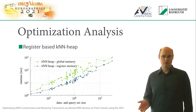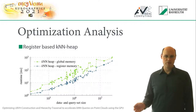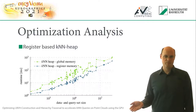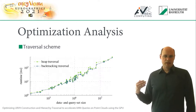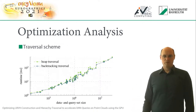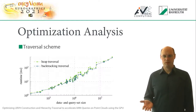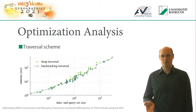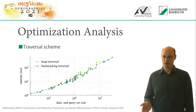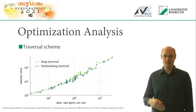Much of the improvement over previous algorithms is due to the register-based KNN heap. On average, the performance gain of it alone is a factor of 2 to 3. Using backtracking traversal removes the need for a second queue, at the cost of more frequently reading global memory. Due to caching, the performance improvement was not as high as we had expected, but it is still substantial. There are some datasets where heap traversal was slightly more efficient, but in general backtracking is much faster.